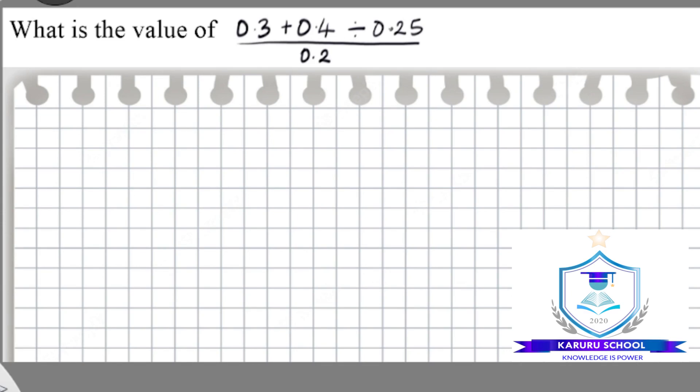For this expression, we will need to convert all the decimal numbers into fractions to make our work easier. So we can rewrite the question as 3 over 10 plus open the brackets we have 4 over 10 divide by 25 over 100, then all these divide by 2 over 10.